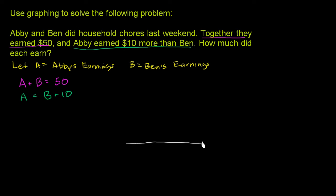I'll be in the first quadrant since we're dealing with earnings, so neither can be negative. Let me define the vertical axis as Abby's earnings axis, and the horizontal axis as Ben's earnings axis.